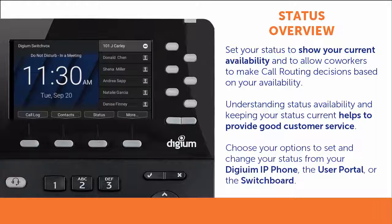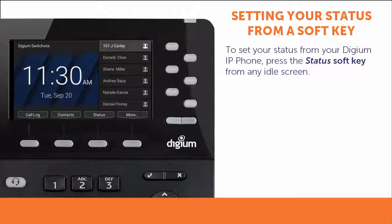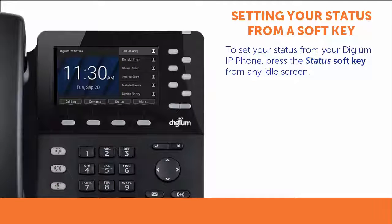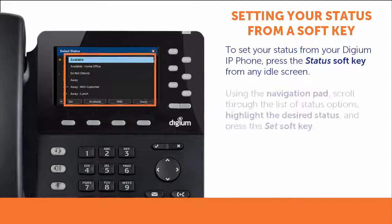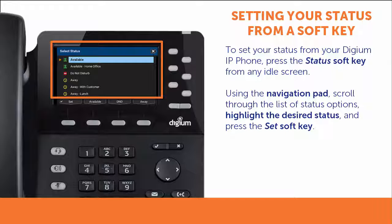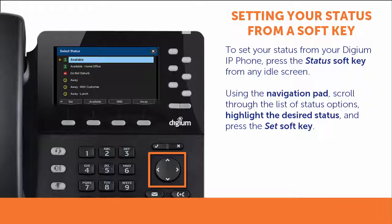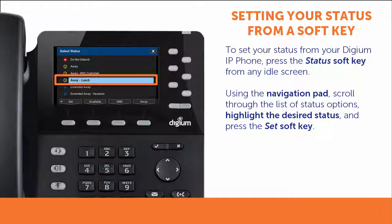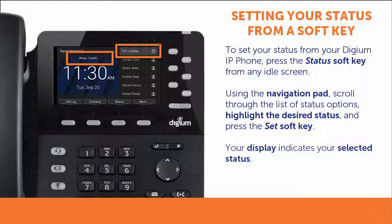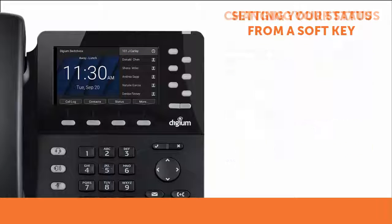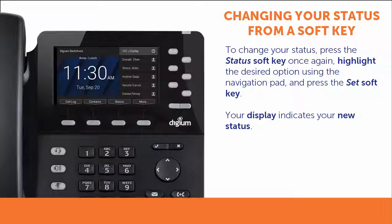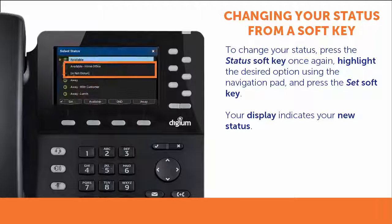You may choose from several options to set and change your status on your phone. To set your status using your phone's soft keys, press the Status soft key from the idle screen. You will be presented with a list of status options. Using the navigation pad, scroll through the list to the desired status option and press the Set soft key. Notice that the display indicates your selected status. To change your status, press the Status soft key once again, make your new selection, and press the Set soft key.